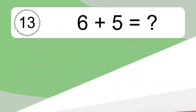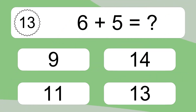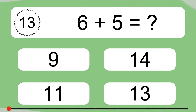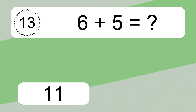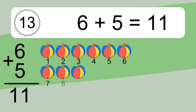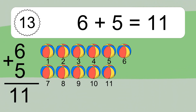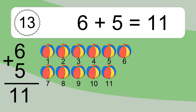6 plus 5 equals what? 6 plus 5 equals 11. Let's count it: 1, 2, 3, 4, 5, 6, 7, 8, 9, 10, 11.